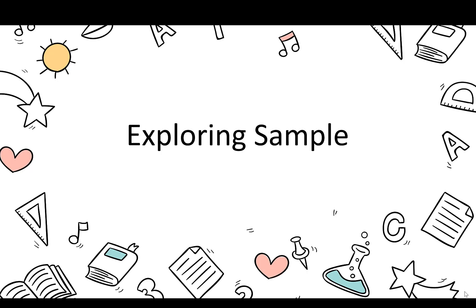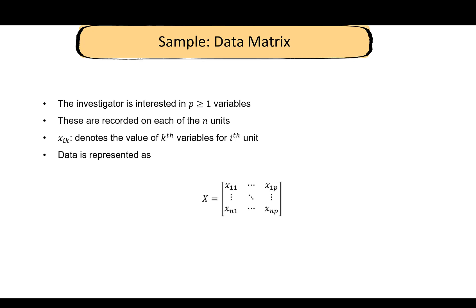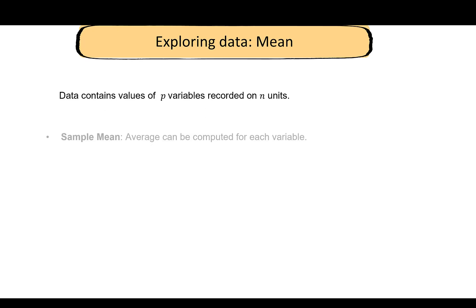In this video we take a look at some concepts related to properties of samples, such as the sample mean and sample variance. The investigator is interested in p variables, each recorded on n units. x_ik denotes the value for the kth variable for the ith unit. The data can be represented in matrix form as X, with n rows and p columns.